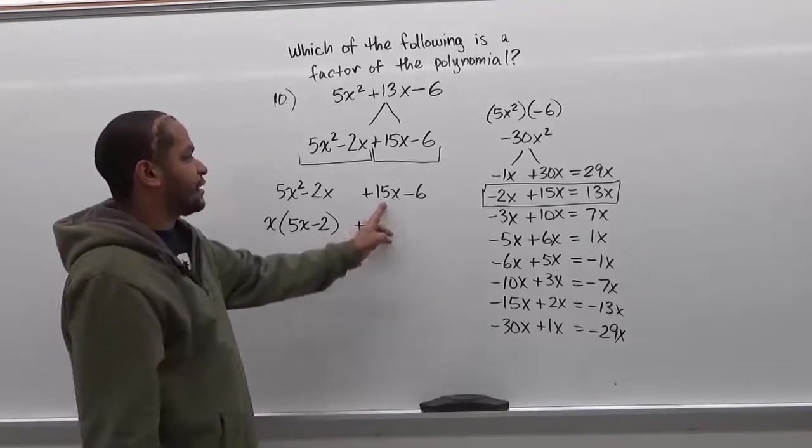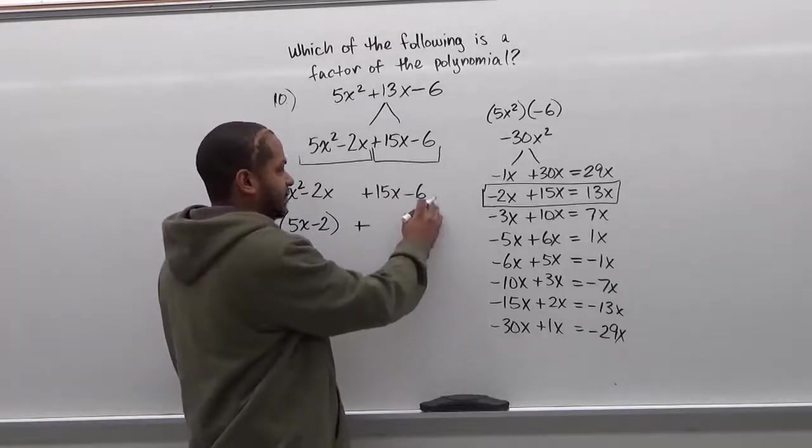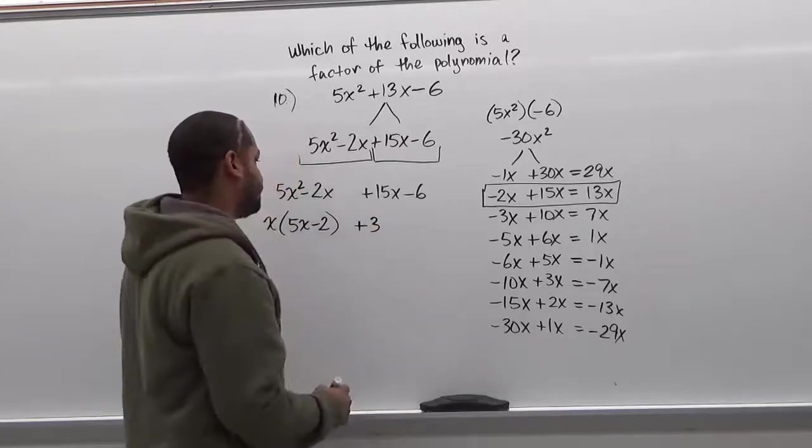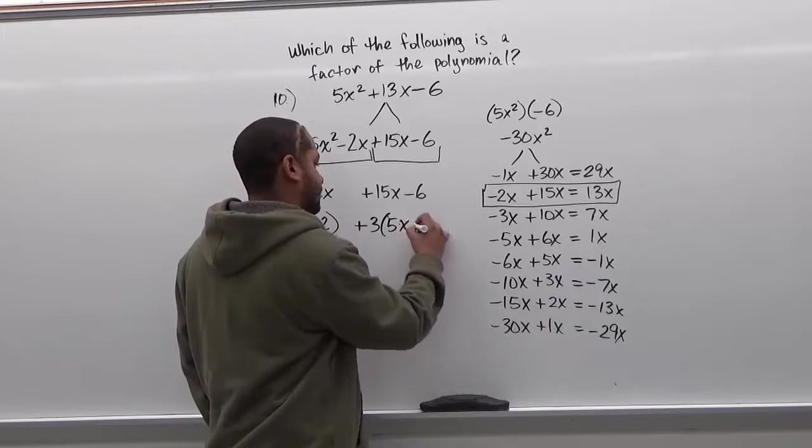Secondly we're looking for the common factor of the two terms again. So between 15x and negative 6, the only common factor they have is just 3. And now what's left over inside is going to be 5x take away 2.